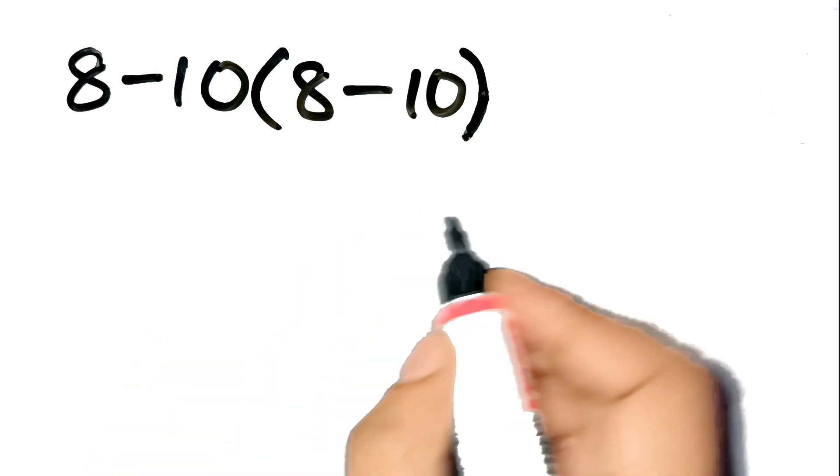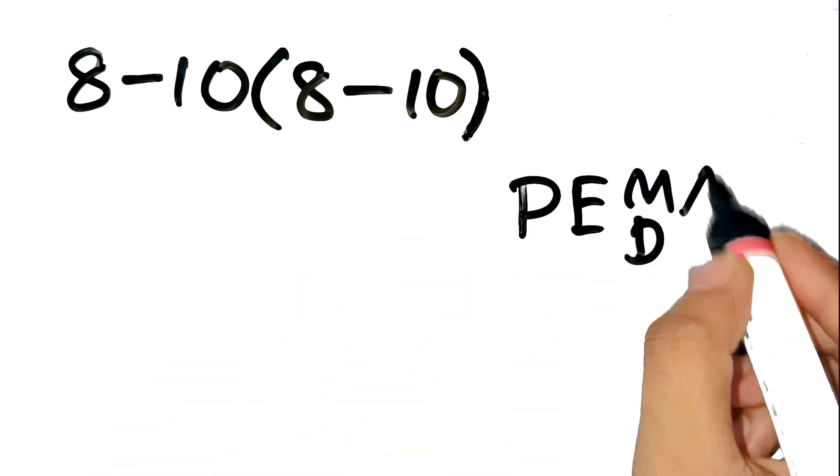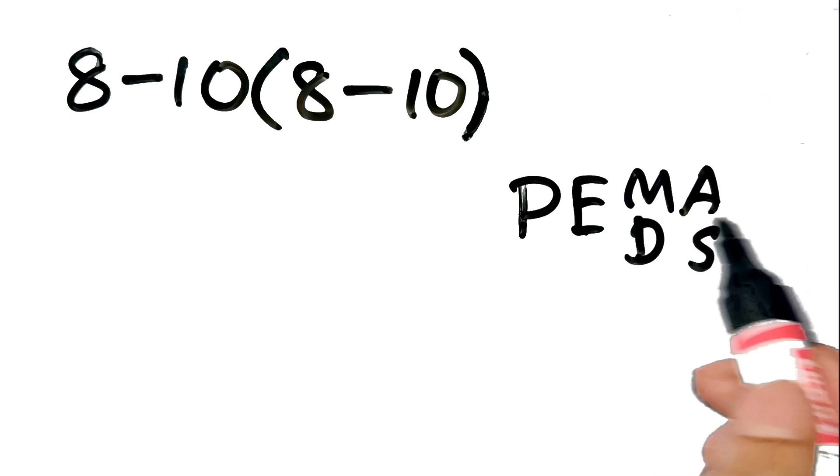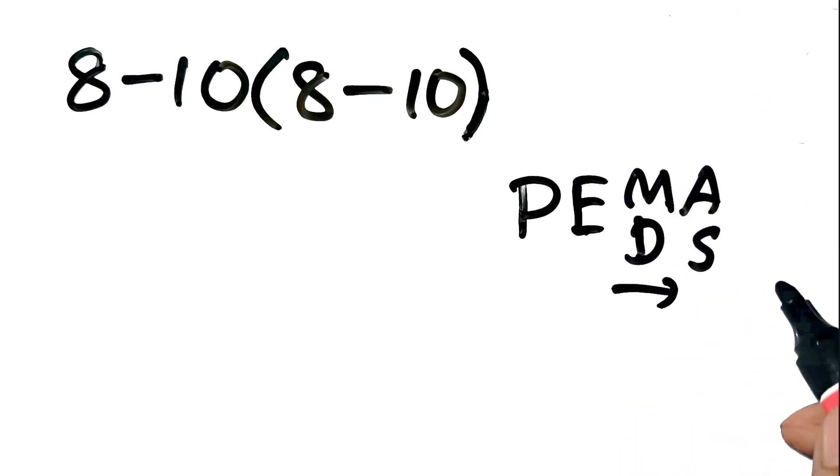Let's unpack it carefully using the order of operations, PEMDAS, which stands for parentheses, exponents, multiplication, and division from left to right, and addition and subtraction from left to right.